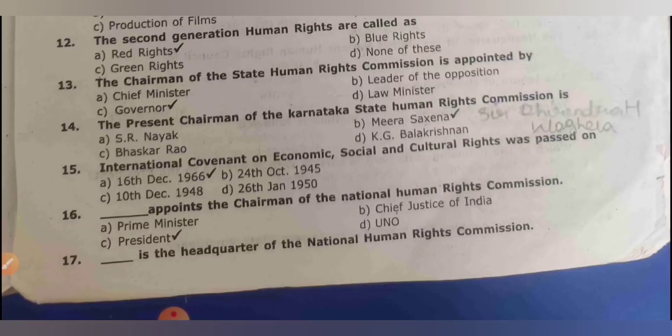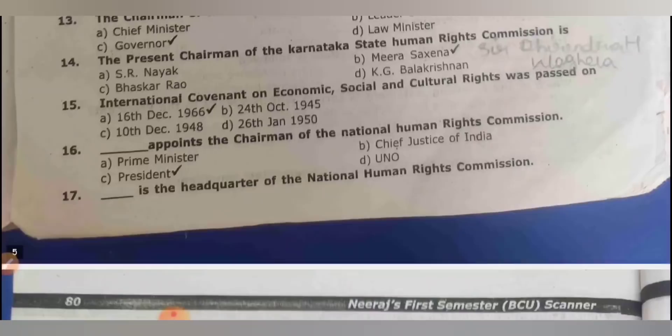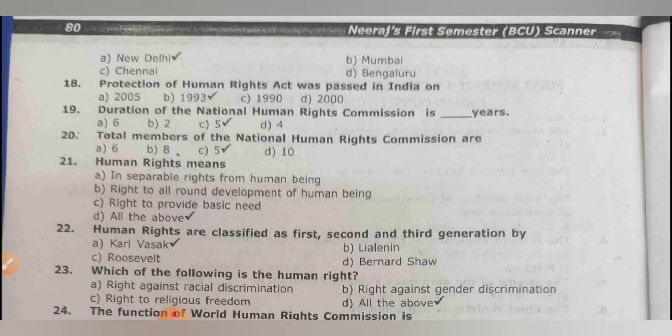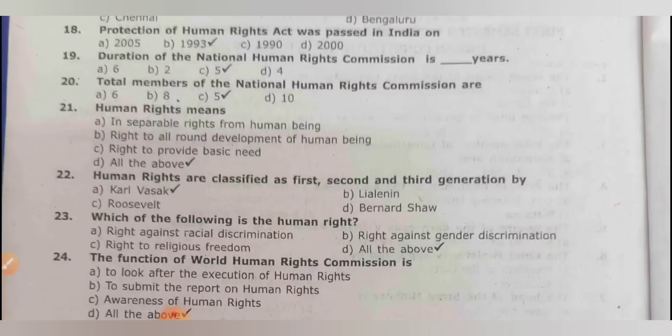The International Covenant on Economic, Social and Cultural Rights was passed on 16th December 1966. The president appoints the chairman of the National Human Rights Commission. The headquarter of the National Human Rights Commission is New Delhi. The Protection of Human Rights Act was passed in 1993. The duration of the human rights commission term is 5 years.